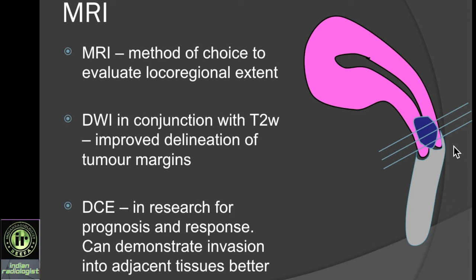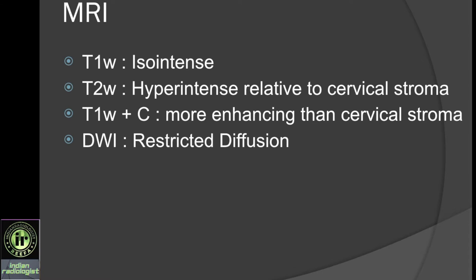This image shows how to protocol your scans. The blue part is the tumor in the cervix. Your axial slices should be oriented perpendicular to the endocervical canal and your true coronals are going to be perpendicular to these. On MRI, the tumor is going to be isointense to cervical stroma on T1 sequence and hyperintense compared to the cervical stroma on T2 sequences. If contrast is given, the tumor is going to be more enhancing than the adjacent cervical stroma and will demonstrate restricted diffusion.